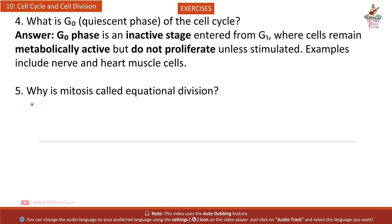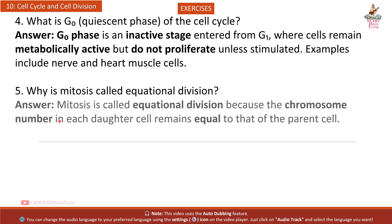Question 5: Why is mitosis called equational division? Mitosis is called equational division because the chromosome number in each daughter cell remains equal to that of the parent cell.